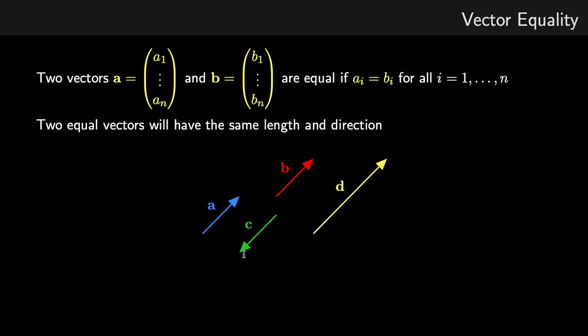And vector D is pointing in the same direction as A and B, but it has a different length. So in this case, only A and B are equal to each other.